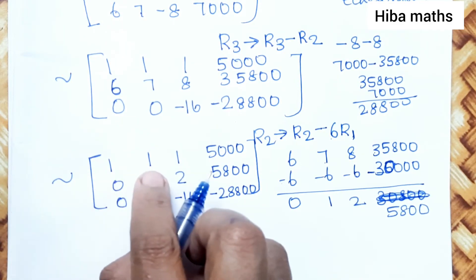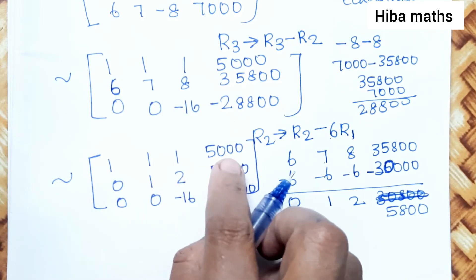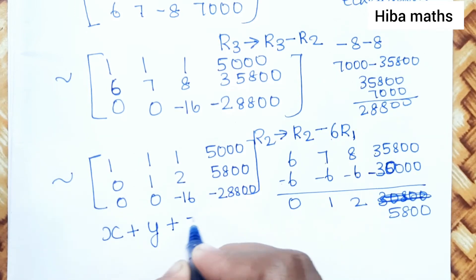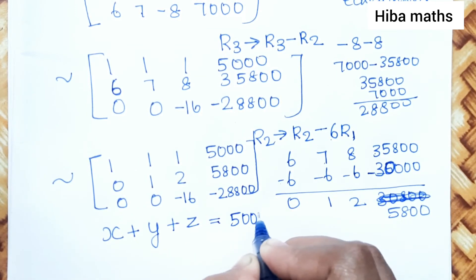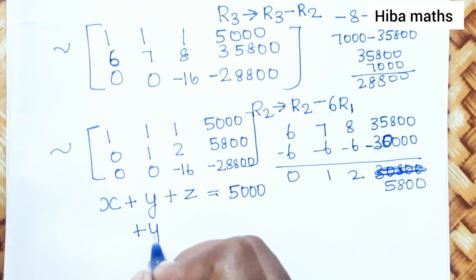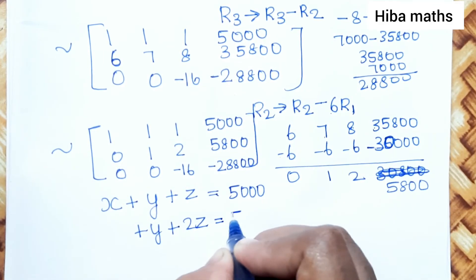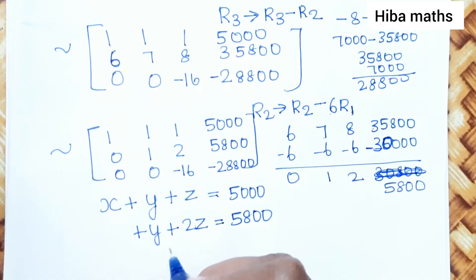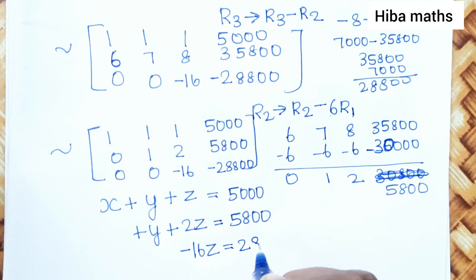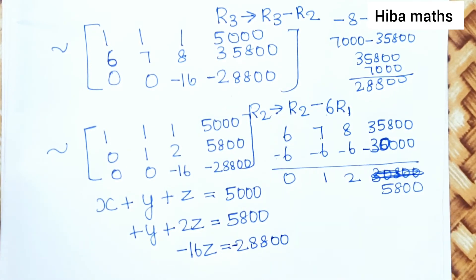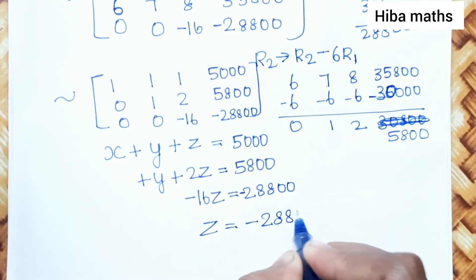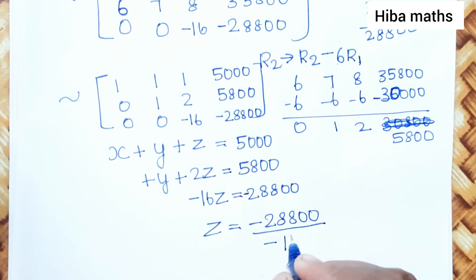Converting back to equations from the row-reduced matrix: the first equation gives X plus Y plus Z equals 5000, the second equation gives Y plus 2Z equals 5800, and the third equation gives minus 16Z equals minus 28800. So Z equals minus 28800 divided by minus 16.